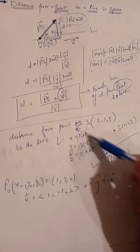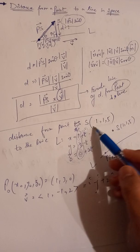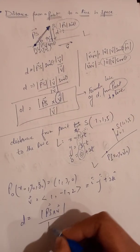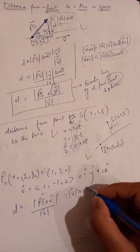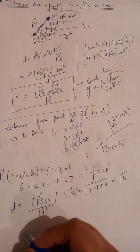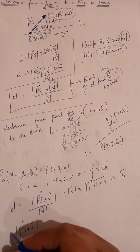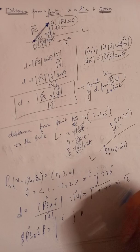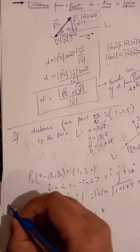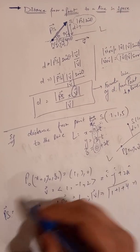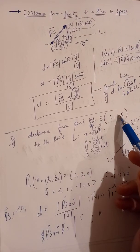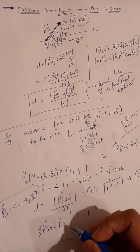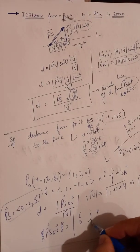Now we apply the formula d = |PS × v| / |v|. First, |v| = √(1² + 1² + 2²) = √6. Next, we calculate PS by subtracting the P naught components from S: PS = (1−1, 1−3, 5−0) = (0, −2, 5).